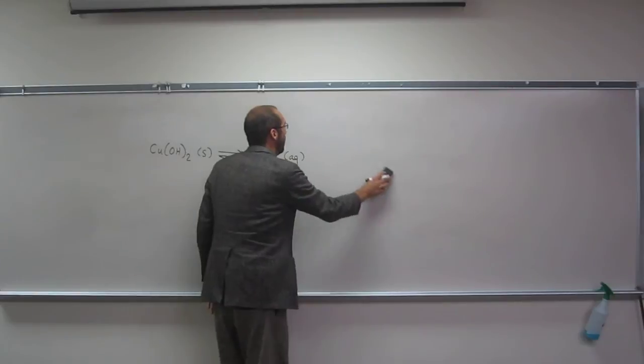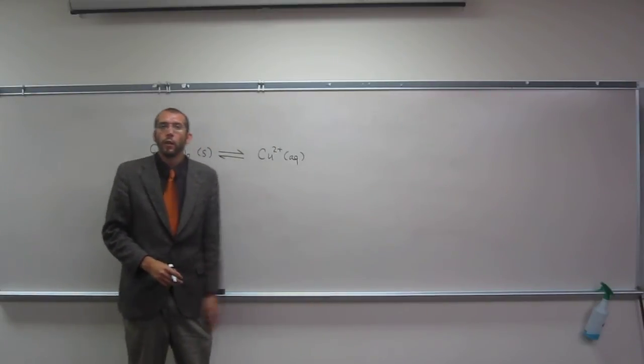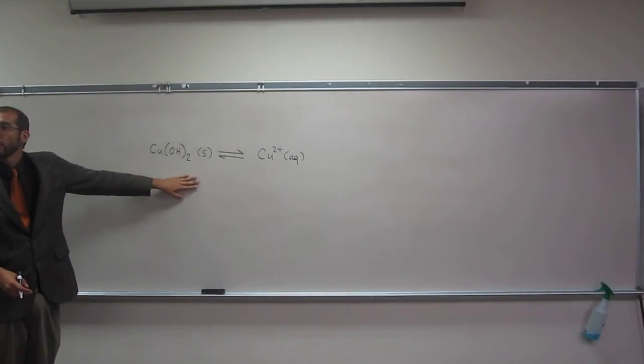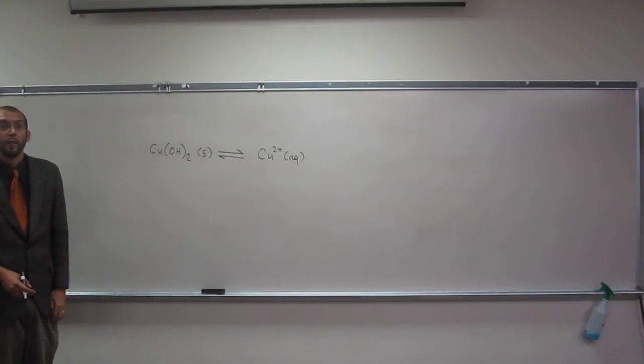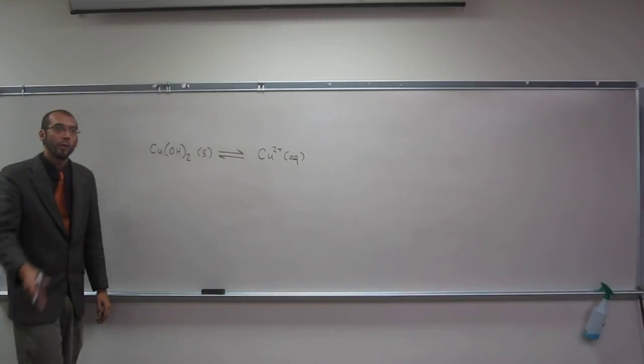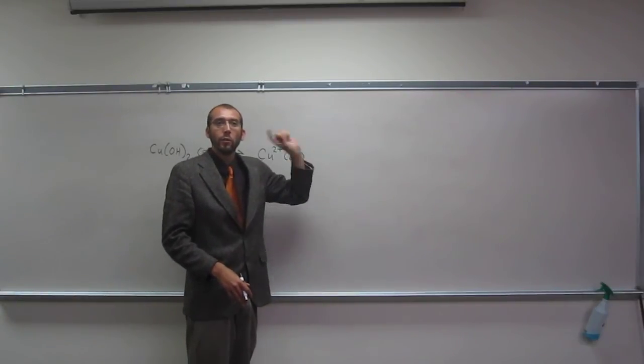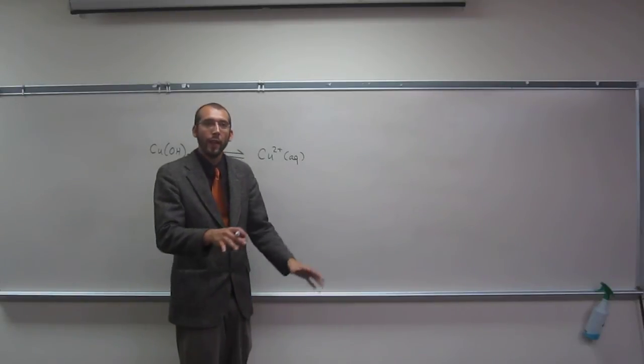So there were hydroxides there, and we removed them. What's going to happen to this side of the reaction? It's going to push it that way. Why? Le Chatelier's principle, because it needs to make more hydroxide ions to maintain the Ksp, the equilibrium constant.